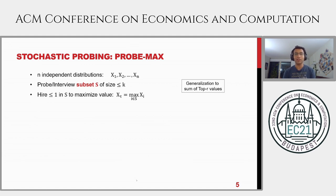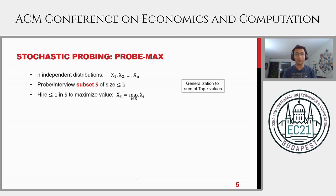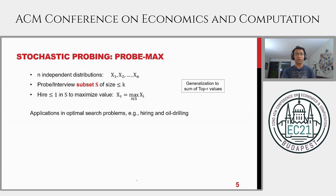Let's look at another stochastic optimization problem: the so-called probe max. Again, you have n boxes representing n candidates whose exact values are unknown but whose distributions you know. This time, your algorithm has a constraint that it can only interview at most k of these candidates — a set S of size at most k. Among these k candidates, you get the best one. It's not an online problem, but you still must decide which k candidates to interview. This problem has many applications to optimal search problems.